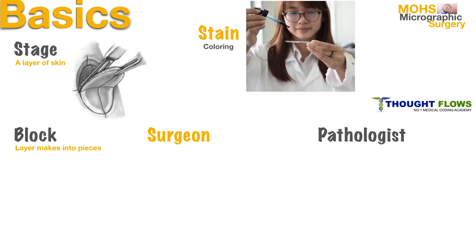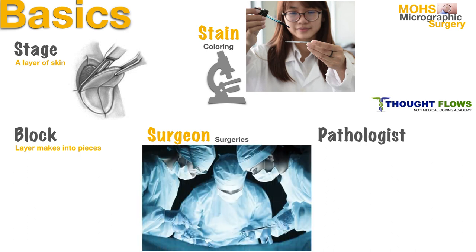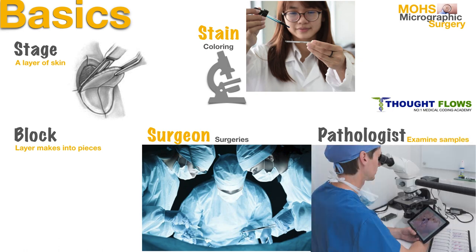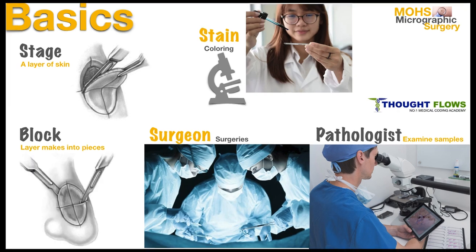Coming to the stain — the sample tissue is colored with dye or chemical to examine under the microscope. A surgeon is a medical practitioner who is qualified to perform surgery. Finally, a pathologist is a physician who studies the causes and effects of diseases, especially one who examines lab samples of body fluids and tissues for diagnostic purposes.